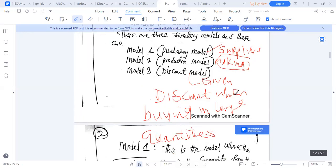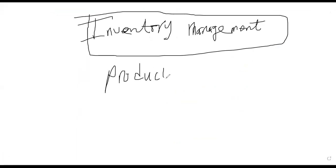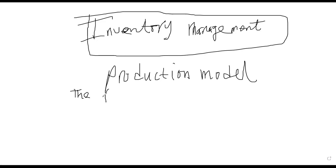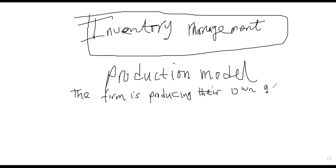Let us look at the production model. Under the production model, the firm is producing their own goods. This is only the production model.